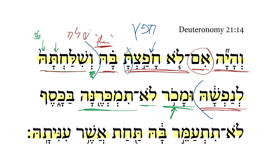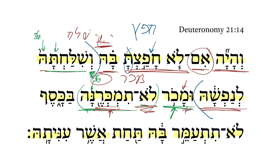And selling — you shall not sell her. The 3fs pronominal suffix is here. The verbal root in both of these cases is mem-kaf-reish. This one is an infinitive absolute in the qal, and then we have a 2ms imperfect of the same verbal root in the qal with that suffix. The negation — lo plus the indicative — is a strong command. Adding the infinitive absolute to that makes it even stronger.